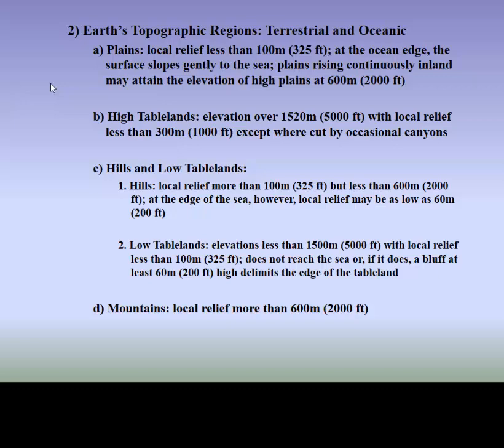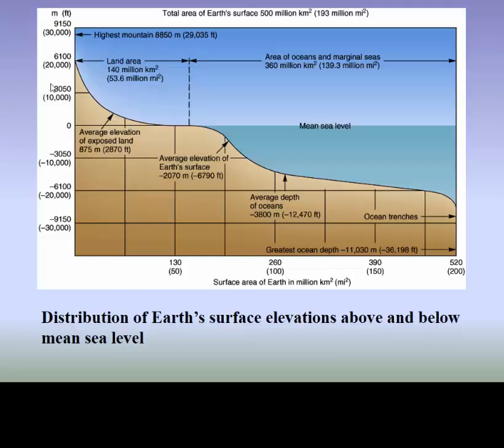We have different topographic regions. Most of us are familiar with the center of the U.S., the central part of the United States — relatively flat — and we get a lot of our tornadoes there as a result. We have mountains with local relief more than 600 meters or about 2,000 feet, and we have a good amount of that in the eastern part of the United States, especially Virginia.